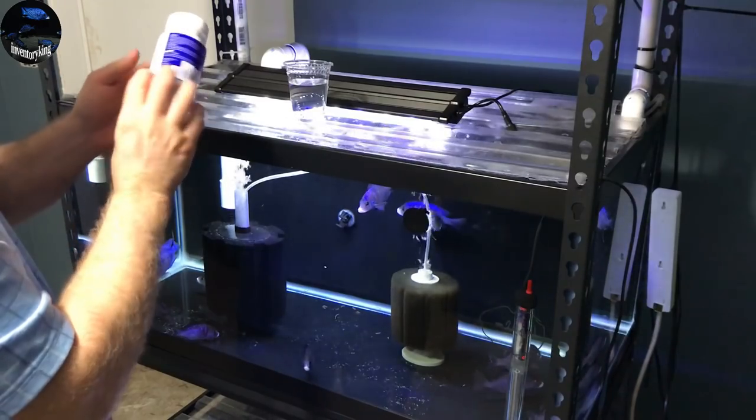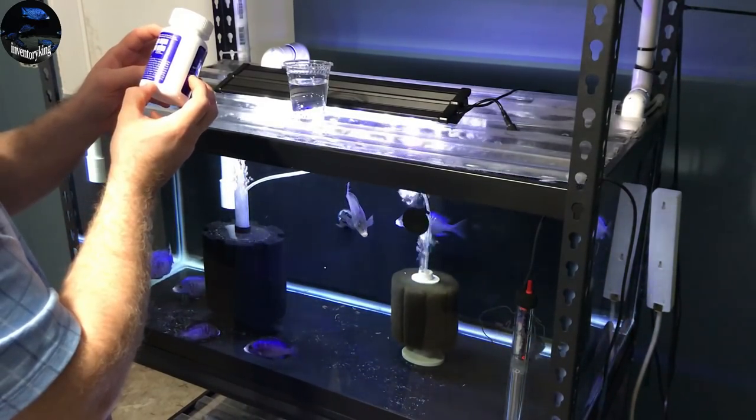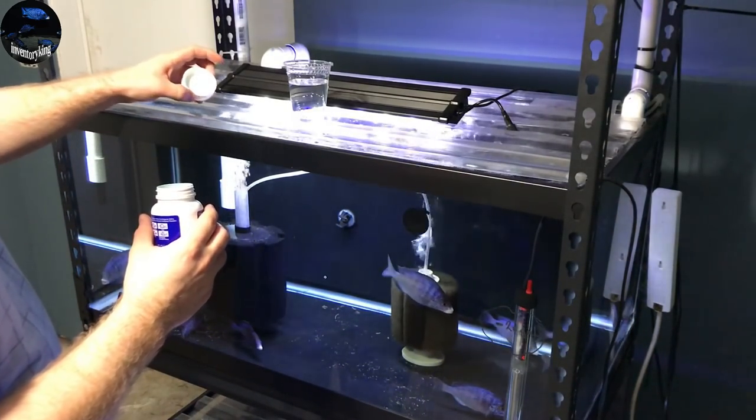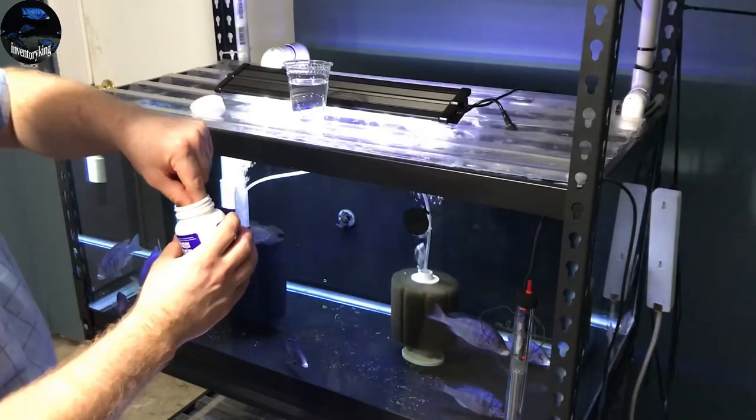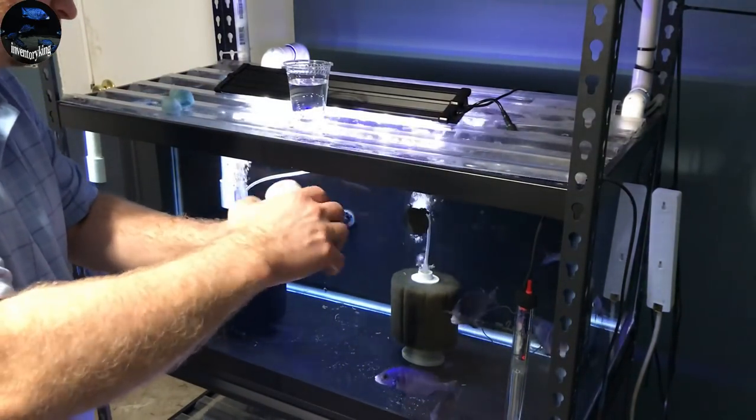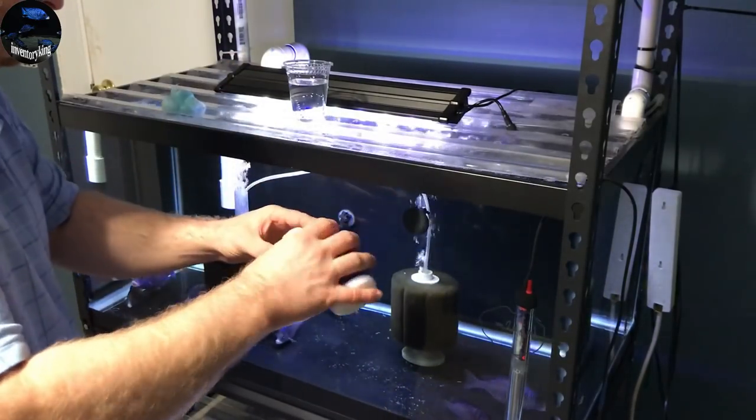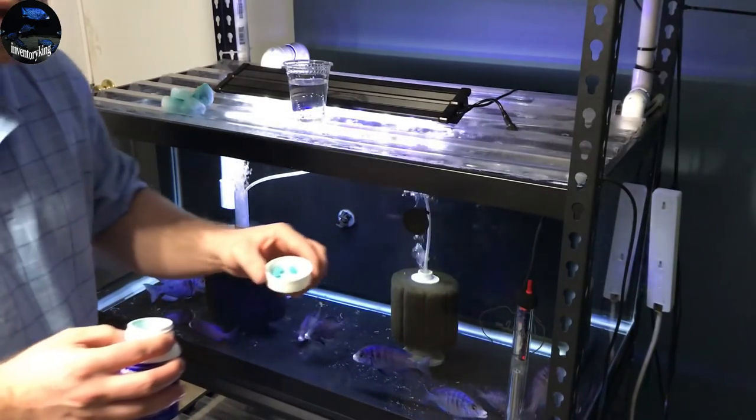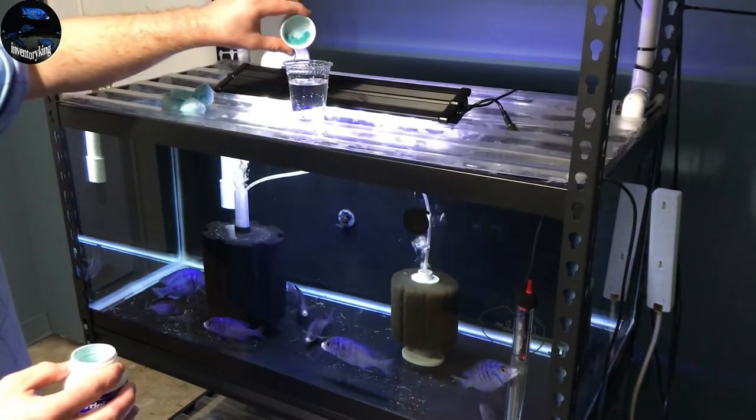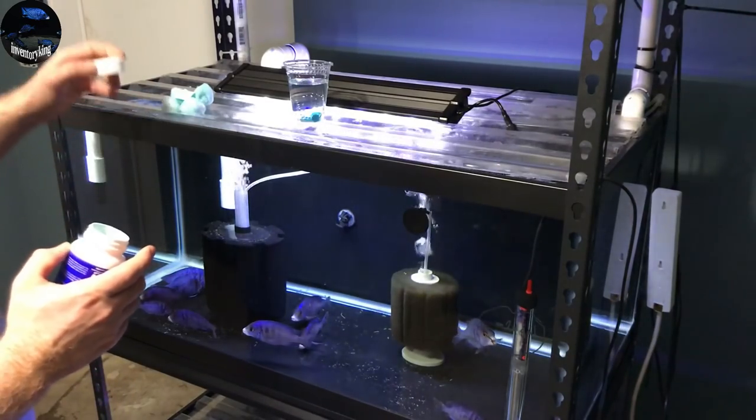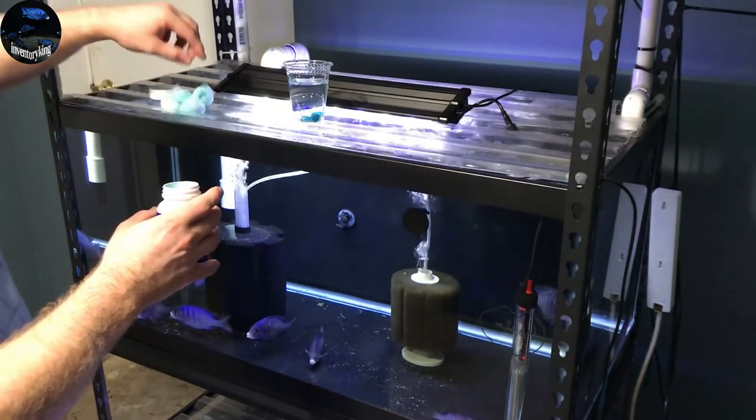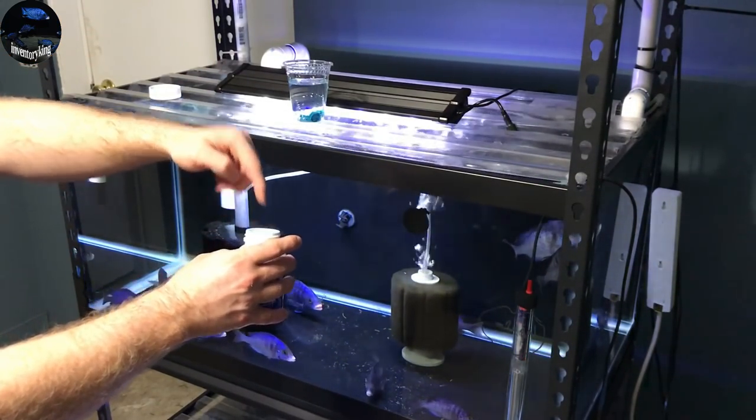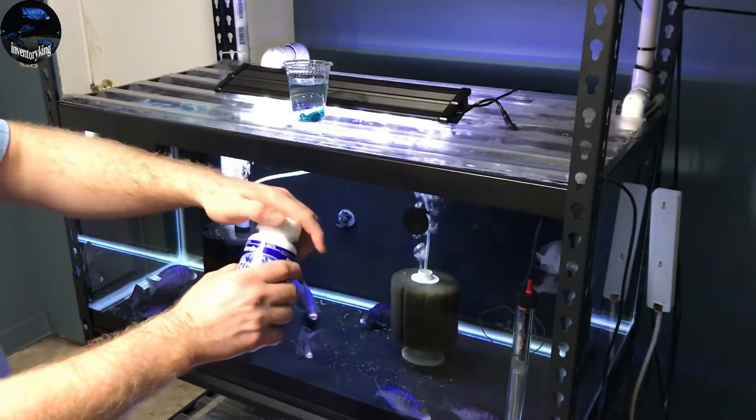It says one tablet for every 10 gallons. With this being a 40 gallon breeder, I am going to be using four of these. Okay as you can see we got four tablets. They are going to go inside the cup of tank water.